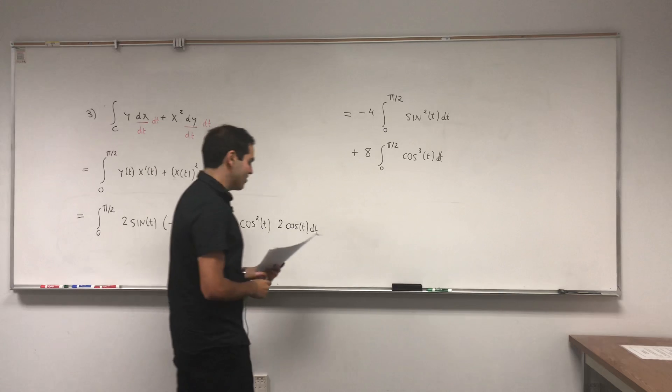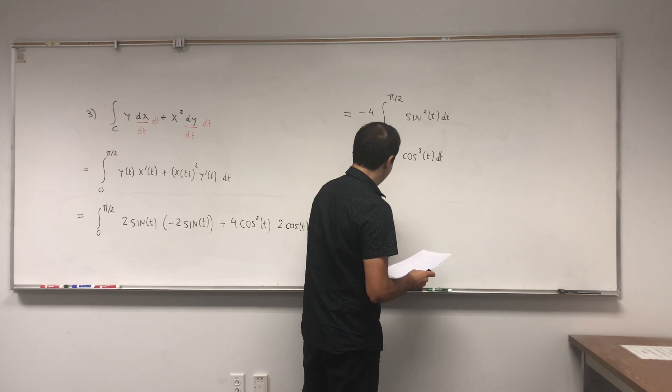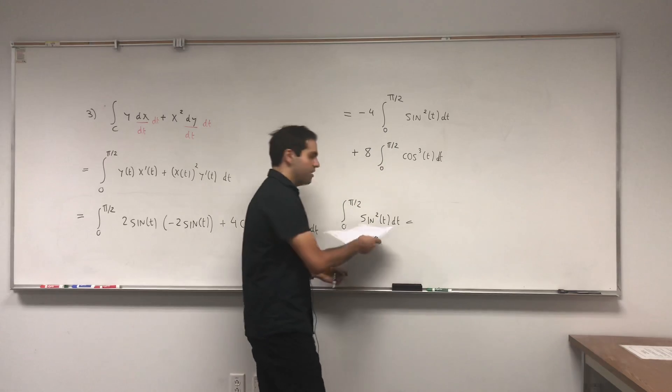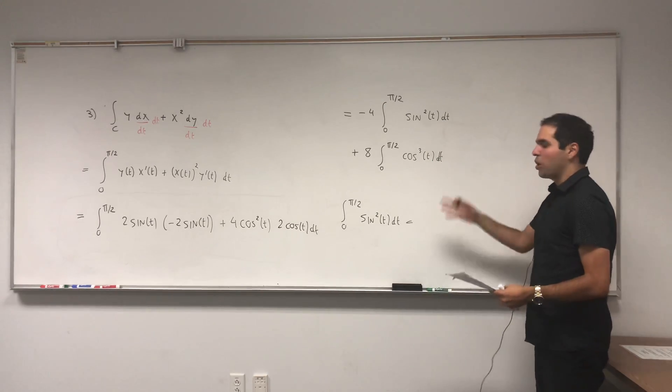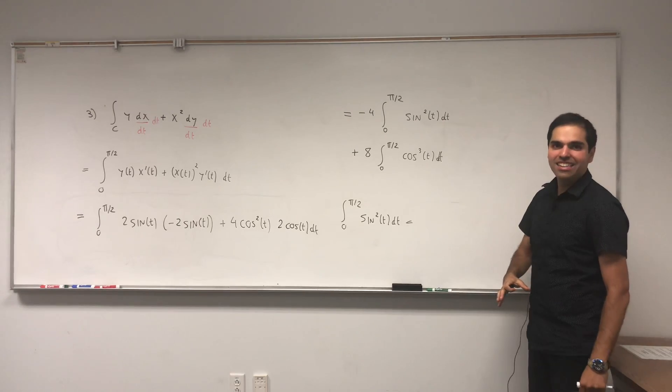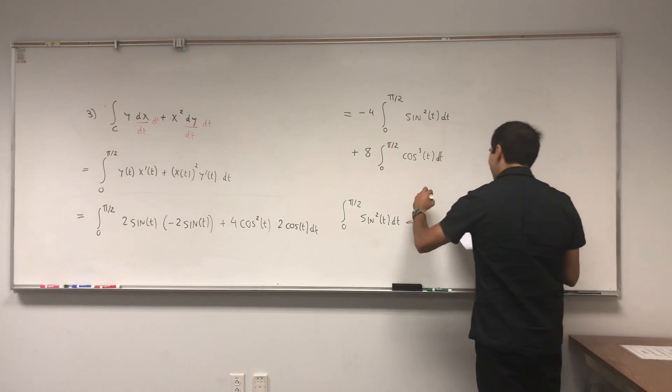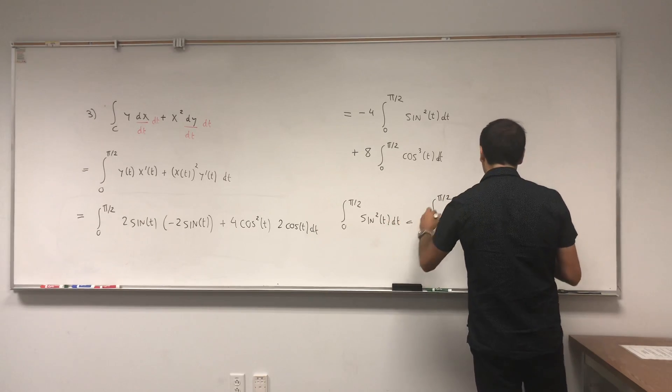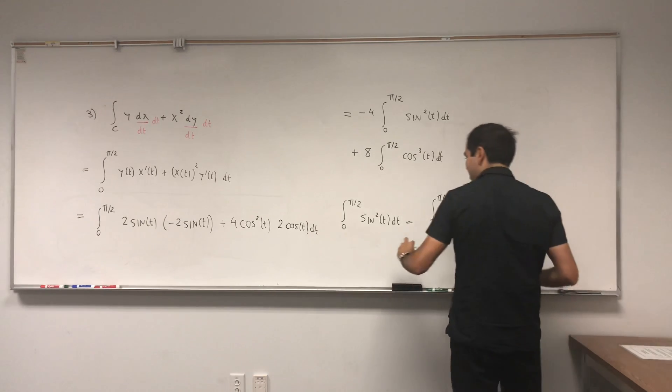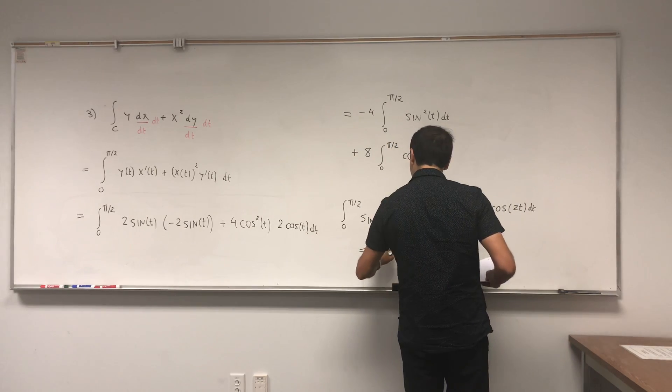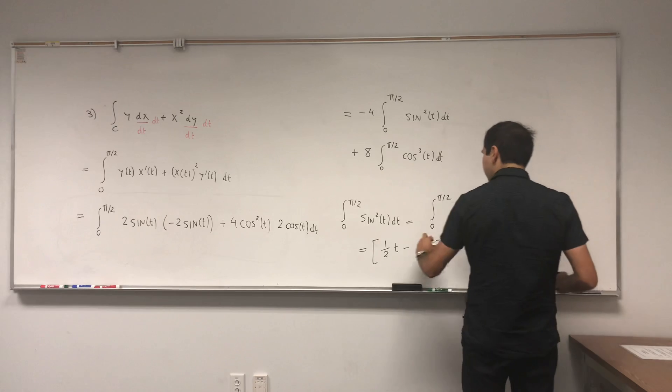And let's calculate those two integrals. First, let's start with this one: integral from 0 to pi over 2 of sine squared t dt. And in fact there is a YouTube video about this if you want to watch it, but essentially the idea is you start with cosine of 2t, you write this as cosine squared minus sine squared, and you write cosine squared as 1 minus sine squared, and you can solve for sine squared. In the end what you end up with is sine squared of t equals one half minus one half cosine of 2t.